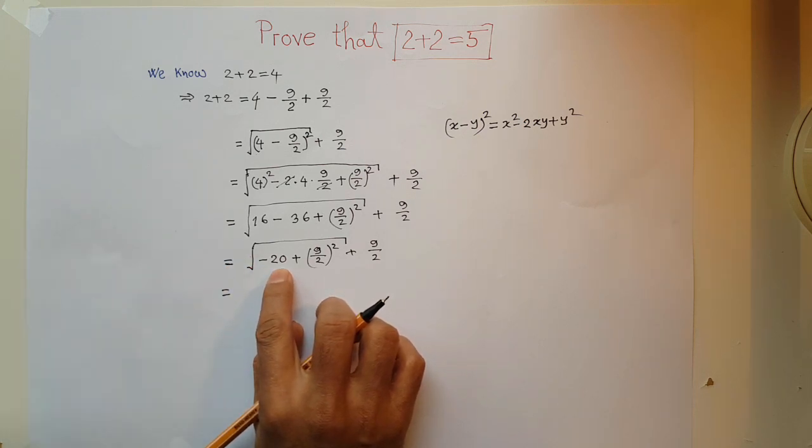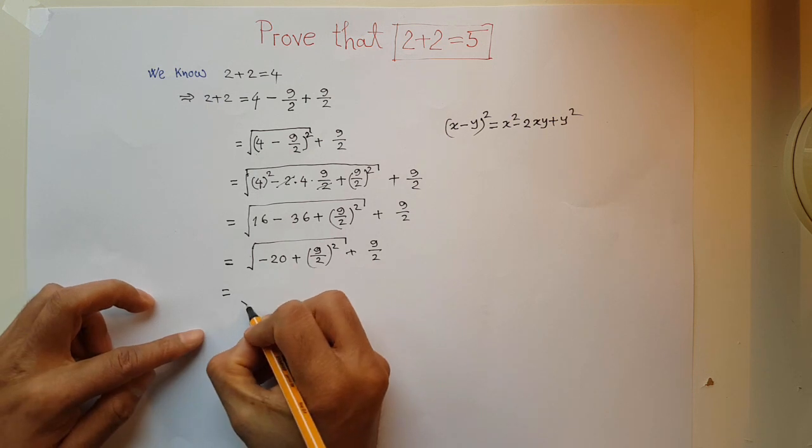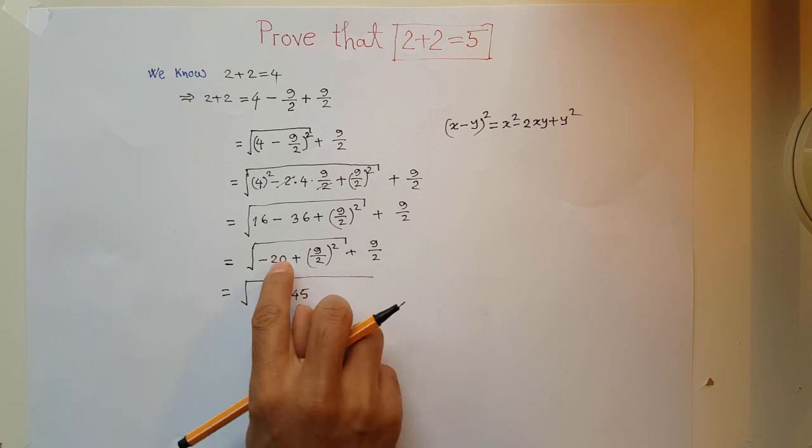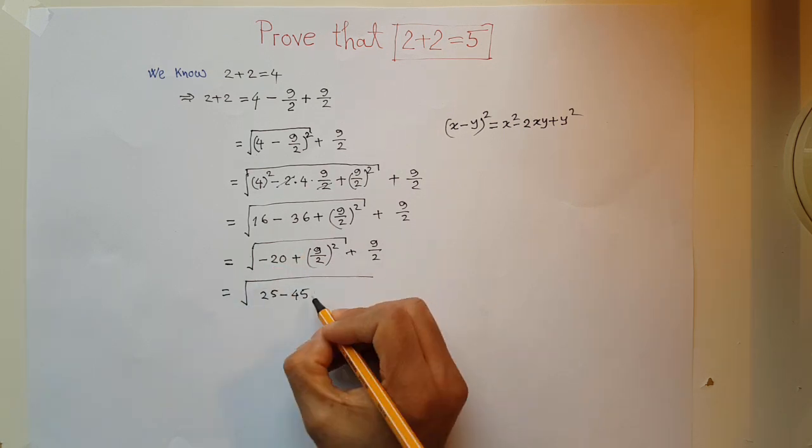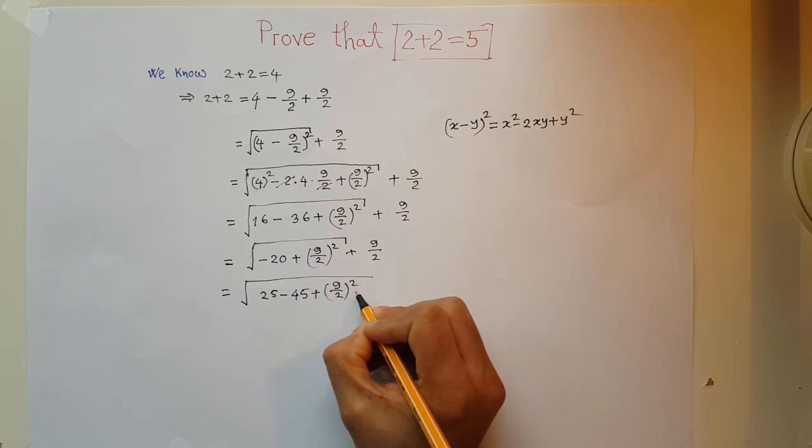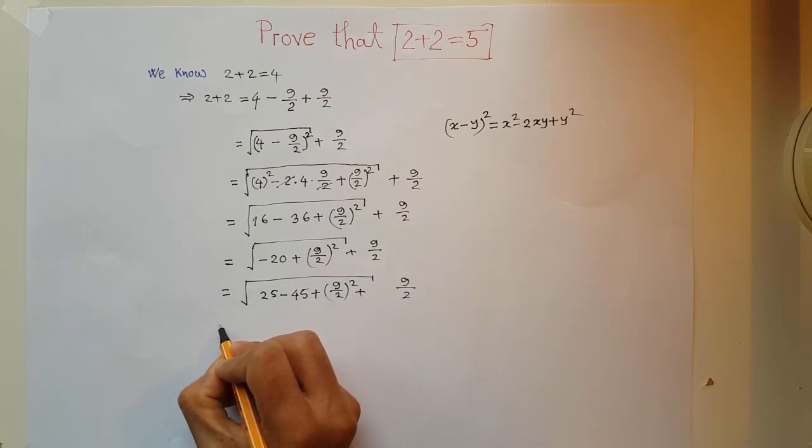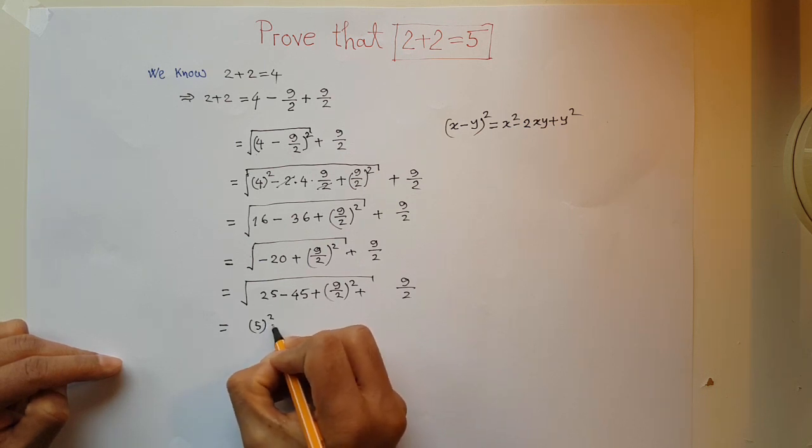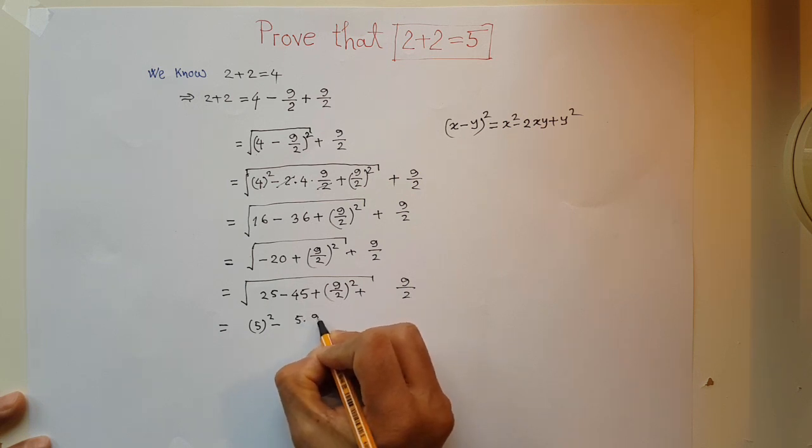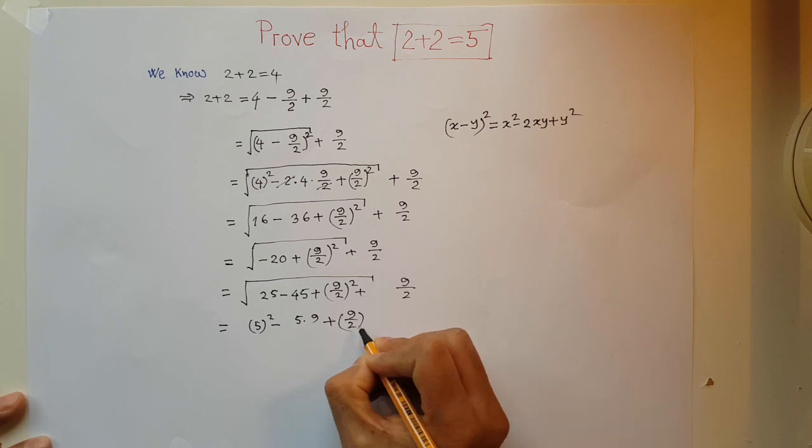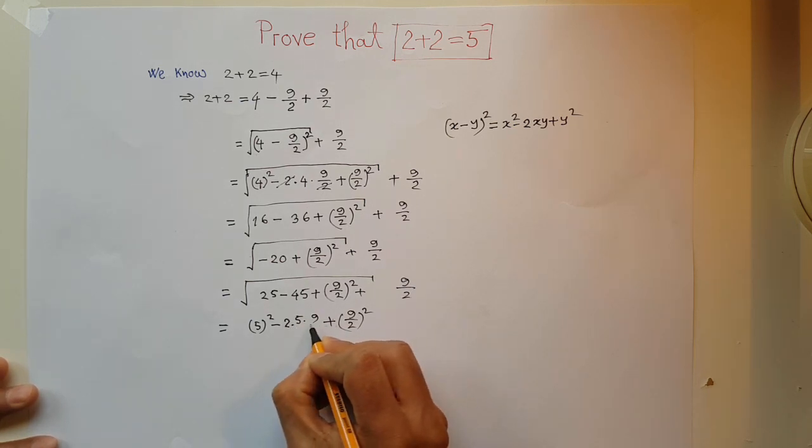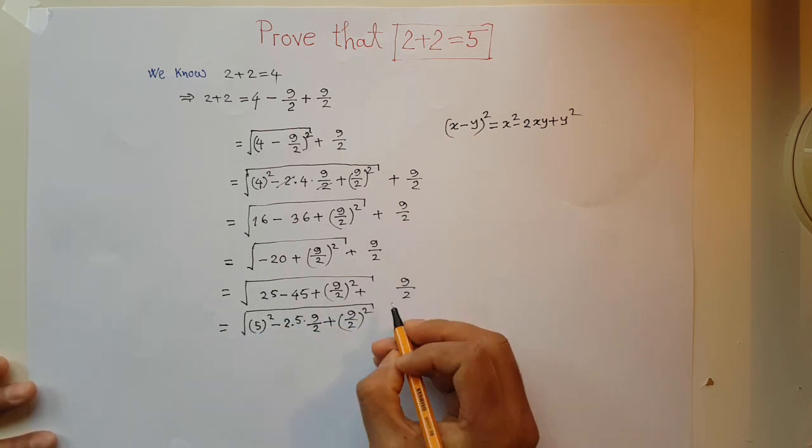At this point of calculation, I want to apply another mathematical engineering. I can expand this minus 20 as 25 minus 45. Now I have to rearrange this 25 as 5 square minus 45 as 5 times 9 plus 9 over 2 whole square. I am including 2 as a multiplication and to cancel it, I have to divide it by 2 as well.